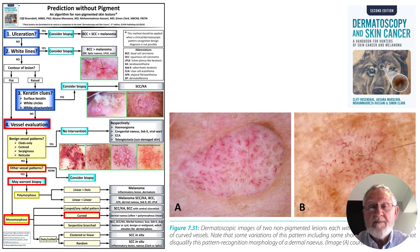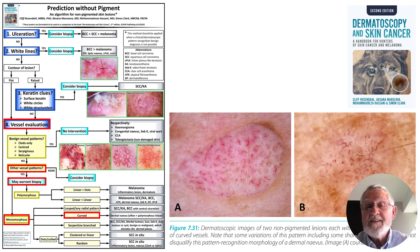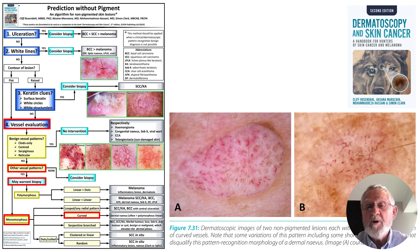Here we have a monomorphous pattern of curved vessels from two lesions in Dermatoscopy and Skin Cancer. Although this is a benign lesion — a naevus — I've included it because the curved vessel pattern can often be misinterpreted. On the right, alongside the recurring pattern of curved vessels, there are some serpentine vessels, which is very common in a dermal naevus. You need to learn to pattern-recognise dermal naevi, or you will end up excising them because you will interpret this as a polymorphous pattern.